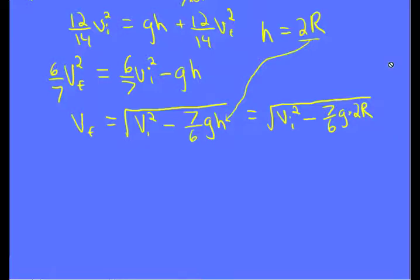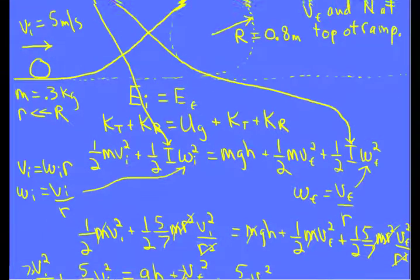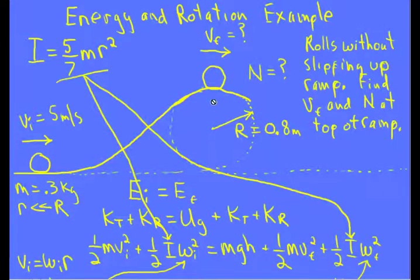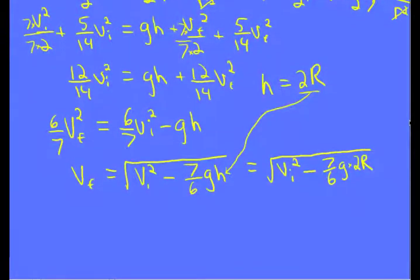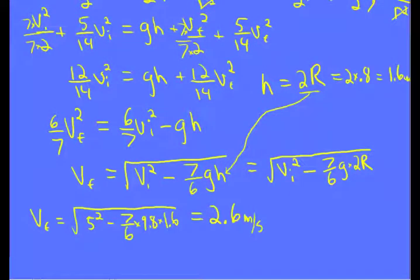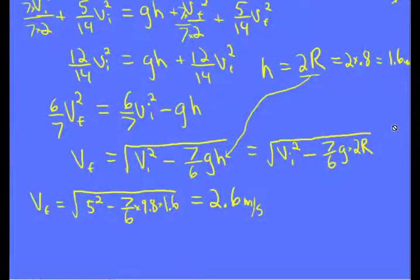And then h is 2 times r of this circle. If you go back up here, the height was 2 times the radius or the diameter. And so we know what that is. It's going to be 1.6 meters. And so we can substitute that in and also put in what v_i is. And we know g is 9.8. And we find out it's going 2.6 meters per second. And so this is a challenging problem. If you can do this, you can handle any energy and rotation sort of problem.